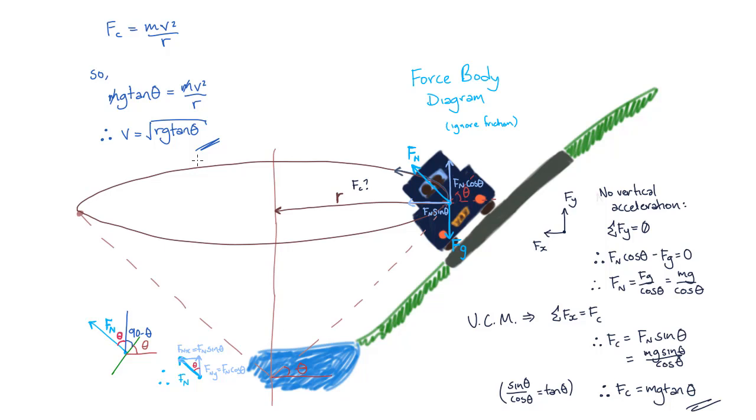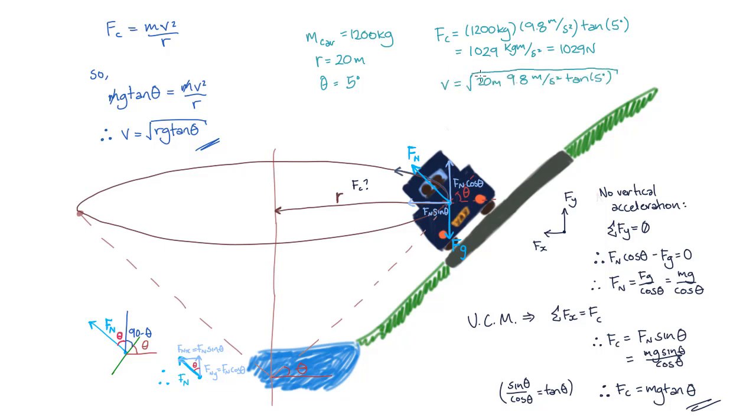Let's plug in some values. We'll use a car mass of 1200 kilograms, a banking radius of 20 meters, and a bank angle of 5 degrees, to find the centripetal force and the car's velocity. The centripetal force is equal to 1029 newtons. And the velocity is equal to 4.1 meters per second. Or, in a more typical unit for cars, this is equal to 14.9 kilometers per hour.